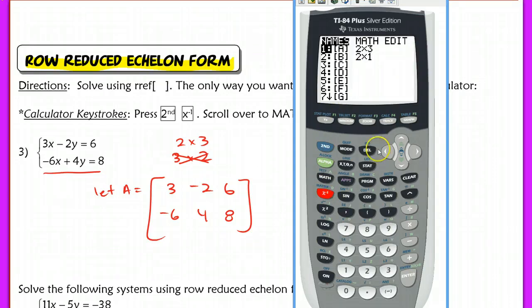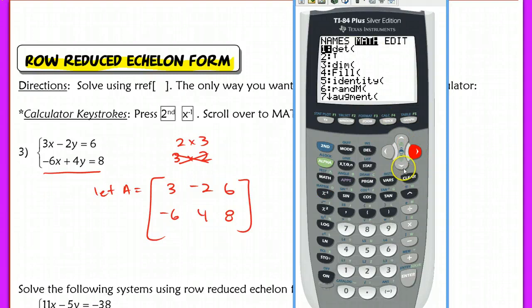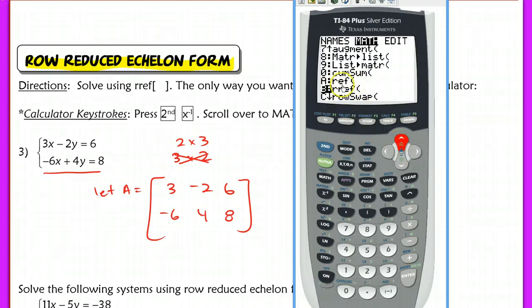Now in my calculator, instead of hitting A and doing A inverse times some other matrix, I'm going to scroll over to math. Scroll to the right. You're going to scroll down until you see RREF, row reduced echelon form. So hit B.